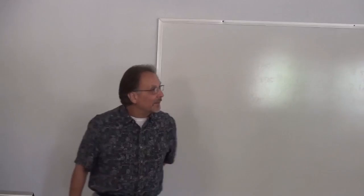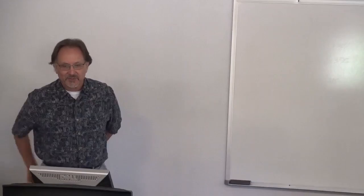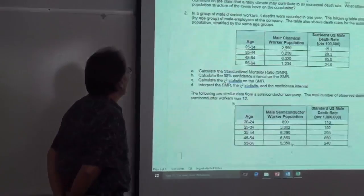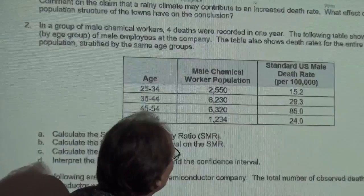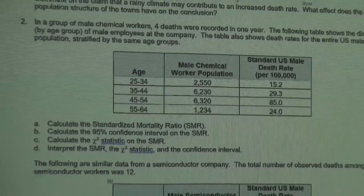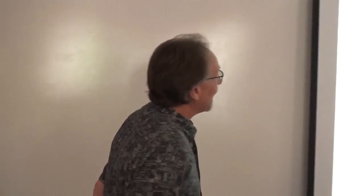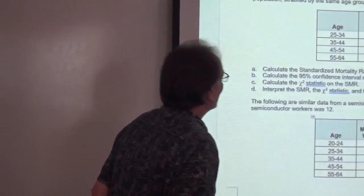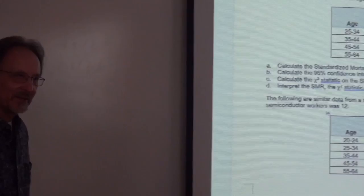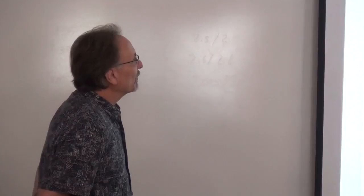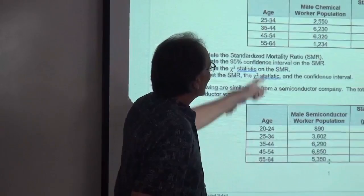Let's take a look at problem 2. Here we have a group of chemical workers — number of deaths recorded, observed in other words. Remember with SMRs, our comparison is a death rate in the standard population rather than the number of people per category in the standard population. So here we're dealing with the death rate, in this case per 100,000 people. And then we have the male chemical worker population.